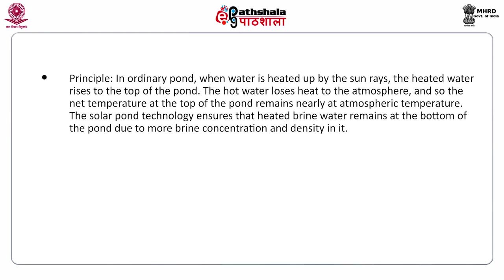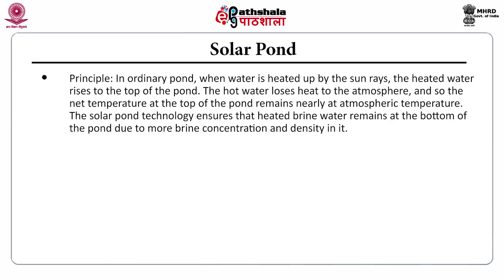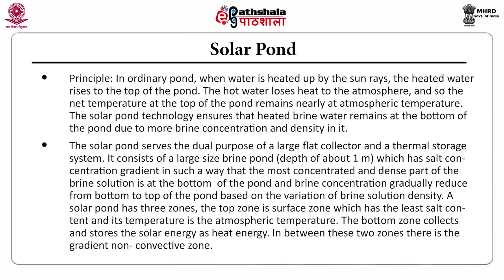Solar pond: in ordinary ponds, heated water rises to the top and loses heat to the atmosphere, keeping the surface near atmospheric temperature. Solar pond technology ensures heated brine water remains at the bottom due to its higher concentration and density. It consists of a large brine pond about 1 meter deep with a salt concentration gradient, where the most concentrated and dense brine is at the bottom, with concentration gradually reducing toward the top.